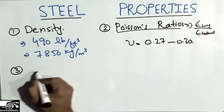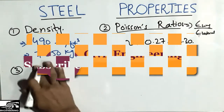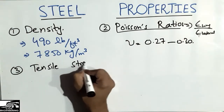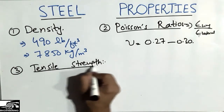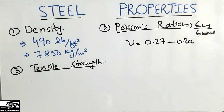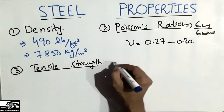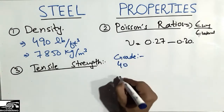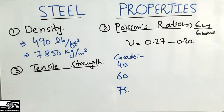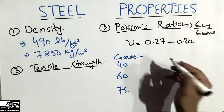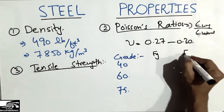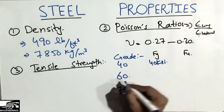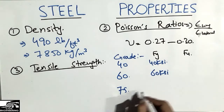The third property is the tensile strength of the steel bar. There are three grades: Grade 40, Grade 60, and Grade 75. Each grade has a different yield limit. The yield strength of Grade 40 is 40 KSI, Grade 60 is 60 KSI, and Grade 75 is 75 KSI.